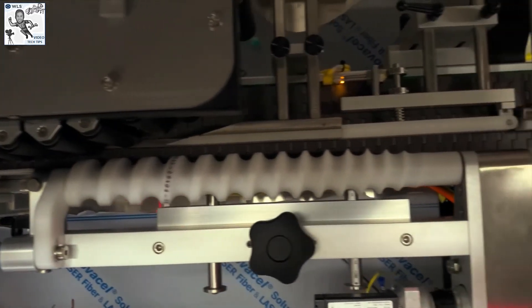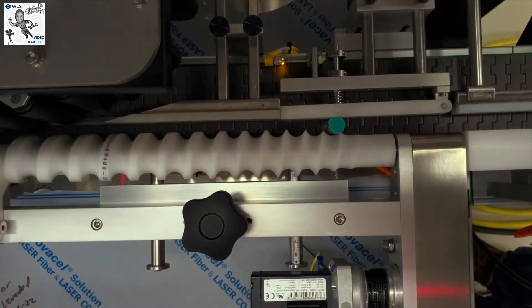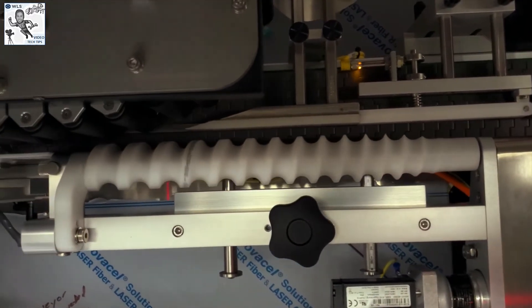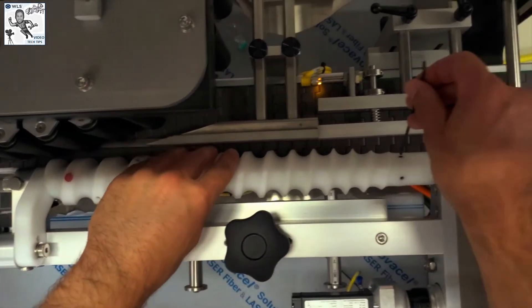As the vial moves through the feed screw, it should nest comfortably between the rollers and the trunnion. This process could take quite a few tries.